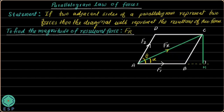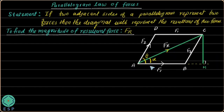Since this is a parallelogram, the opposite sides are equal. So side BC equals F2 and side CD equals F1. The length of each side indicates the magnitude of the corresponding force — AB = F1 and BC = F2.